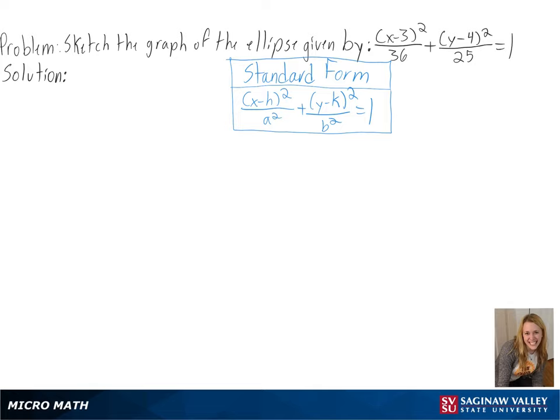Our problem is to sketch the graph of the ellipse given by (x-3)²/36 + (y-4)²/25 = 1. Our equation is already in standard form, so we can start plotting our graph.